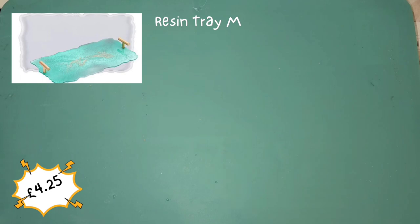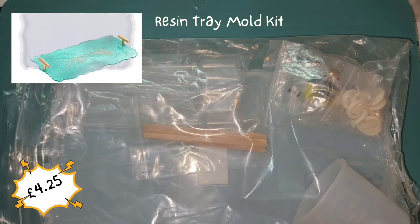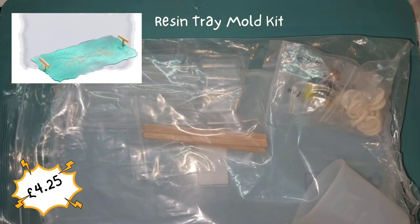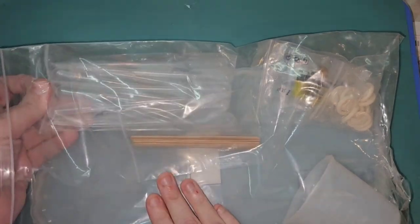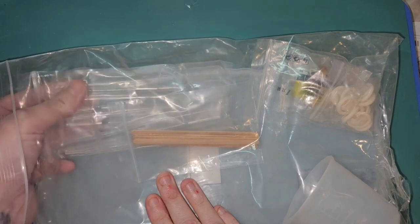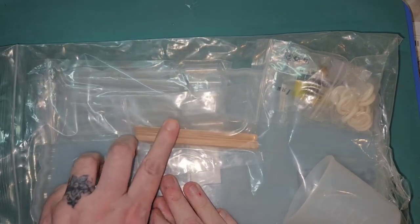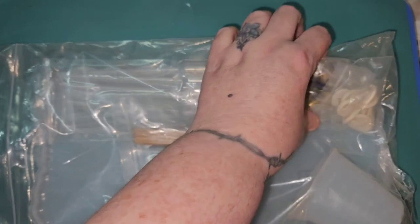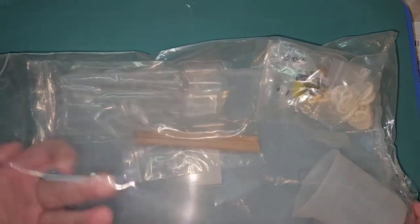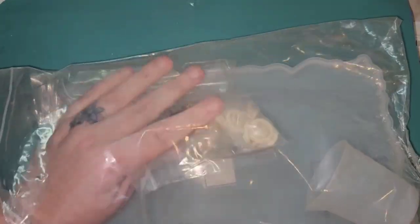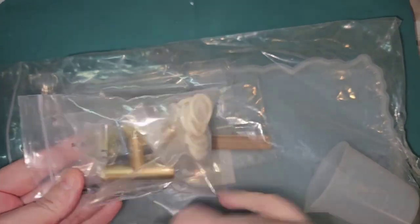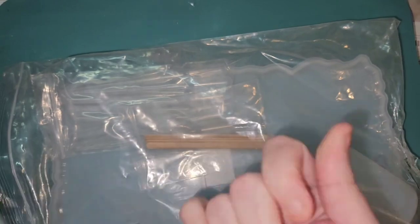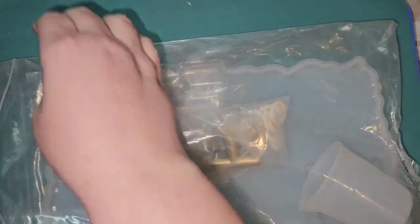You've got this resin tray kit. You get the actual tray mold, 10 pipettes, five stir sticks, a silicone pot to mix your resin, and in this bag you get your screws, handles, and some finger gloves. That is a bargain for a kit.